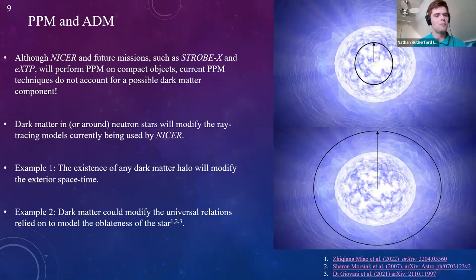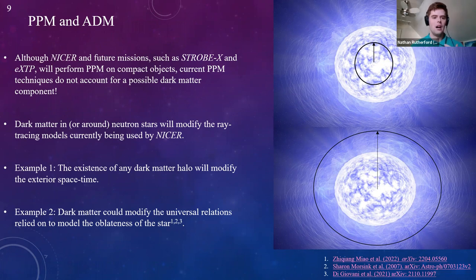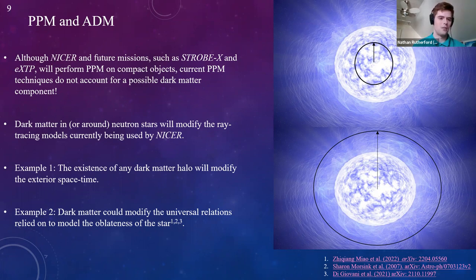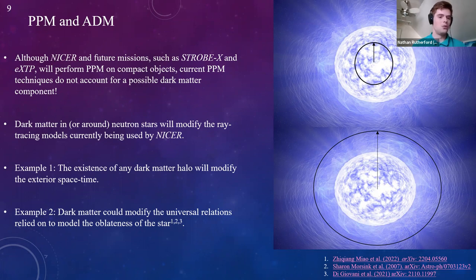ADM can influence PPM and alter how it's conducted. Current pulse profile modeling techniques do not account for the possibility of a dark matter component, which can have a profound effect. Dark matter in or around the neutron star will modify the ray-tracing models currently used by NICER. For example, the existence of a halo will modify the exterior spacetime of the neutron star and alter the photon trajectories measured from the baryonic surface, potentially leading to incorrect results if dark matter is not accounted for.